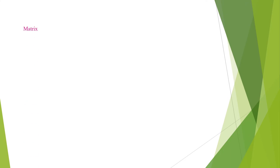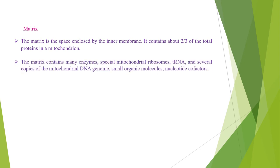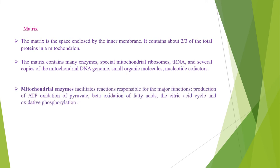The next mitochondrial part is the matrix. The matrix is the space enclosed by the inner membrane. It contains about two-thirds of the total proteins in a mitochondrion. The matrix contains a highly concentrated mixture of hundreds of enzymes, special mitochondrial ribosomes, tRNA and several copies of the mitochondrial DNA genome, as well as small organic molecules and nucleotide cofactors. Mitochondrial enzymes facilitate reactions responsible for major functions including production of ATP, oxidation of pyruvate, beta oxidation of fatty acids, the citric acid cycle and oxidative phosphorylation.